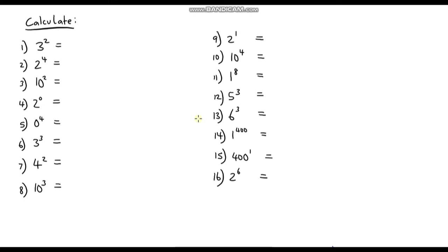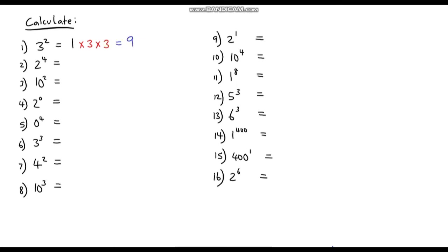Okay, it's over to you now. Pause the video and see if you can calculate the following indices. The first one: 3 squared. Remember, we always start with 1 and multiply by 3 twice. So what is 1 times 3 times 3? Well, 3 times 3 is just 9 — so our answer is 9.